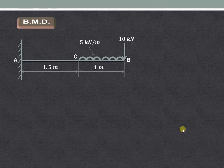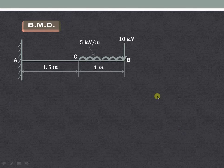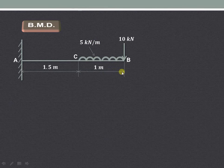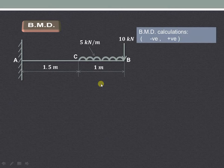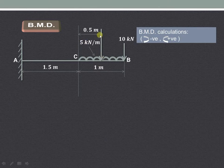Now let us start with the bending moment diagram calculations. We will first convert the uniformly distributed load of 5 kN per meter acting over 1 meter length into a point load, which will act at the center of that 1 meter length. So 5 into 1 is the UDL converted to a point load acting at a distance of 0.5 meter.